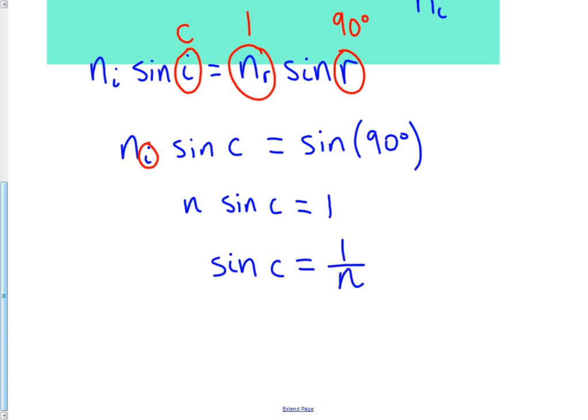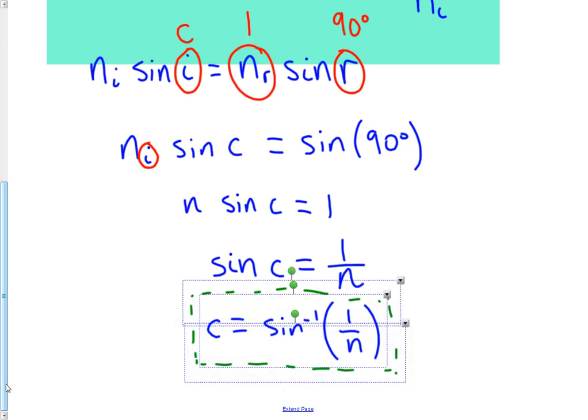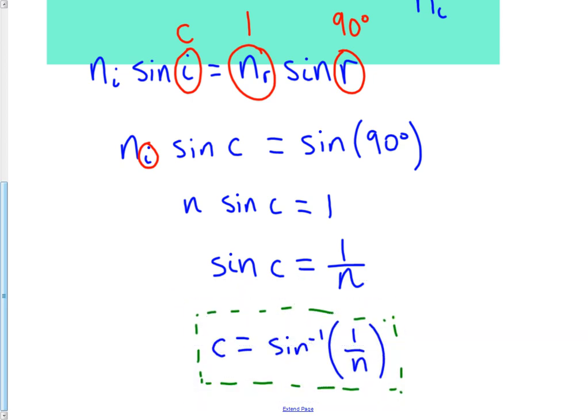This is the formula for the critical angle. If you want to find the critical angle, if we know that sin C is 1 over N, then C is the inverse sine of 1 over N. This bit here isn't actually on the formula sheet. The previous formula is on the formula sheet, but to actually get the critical angle by doing the inverse sine is not on the formula sheet.